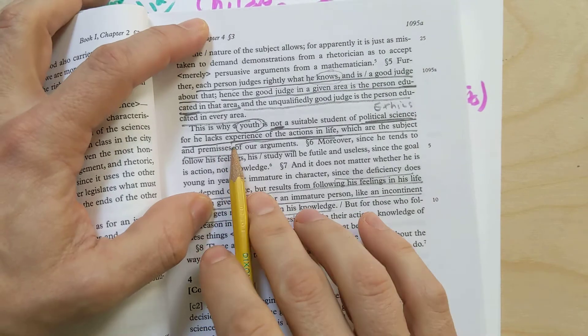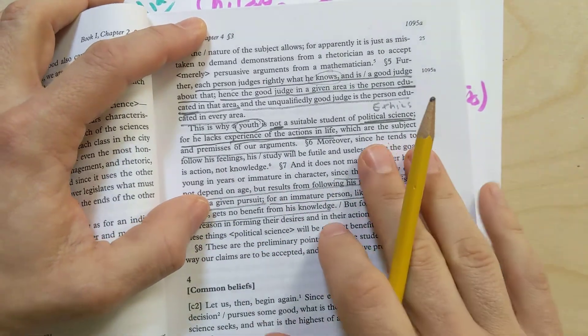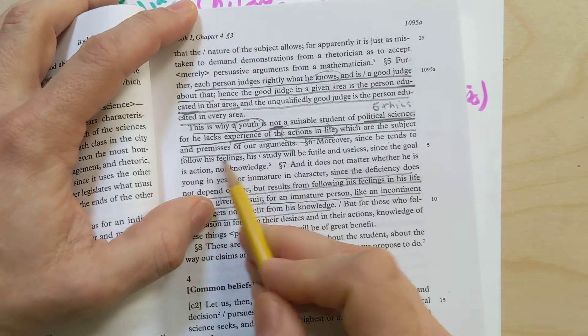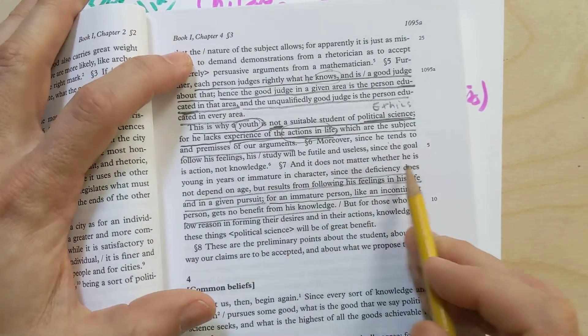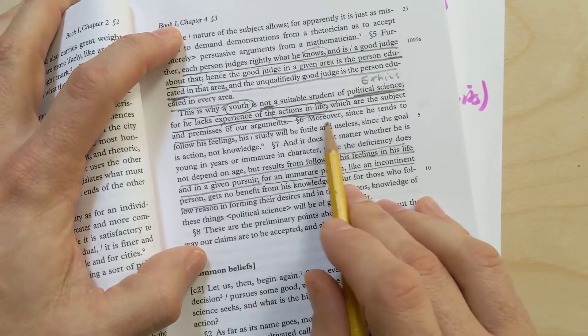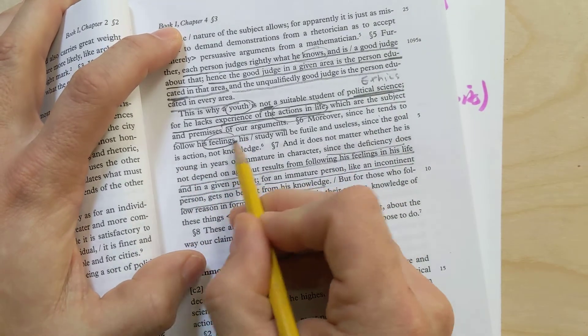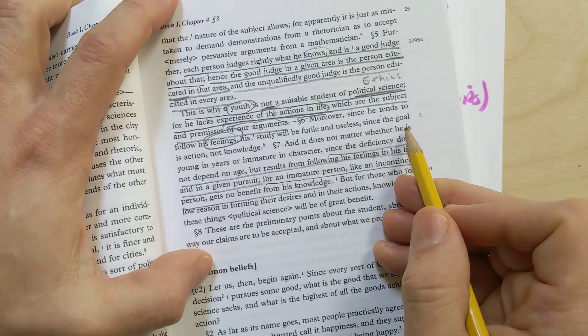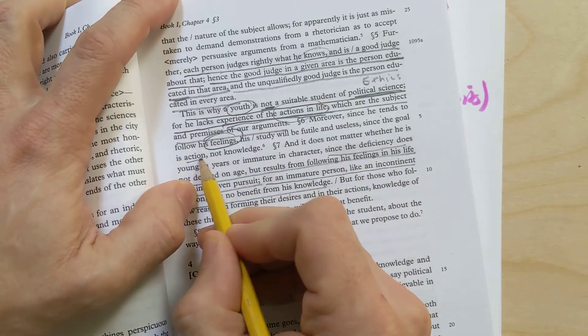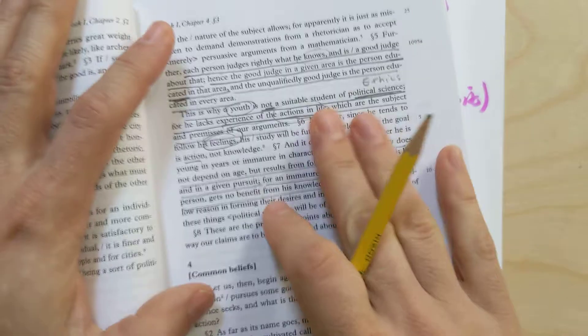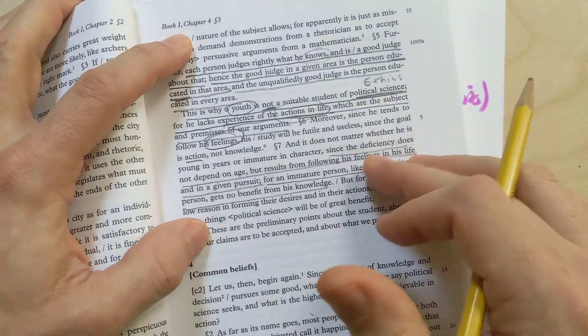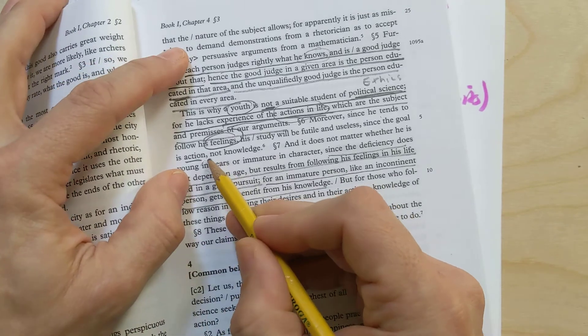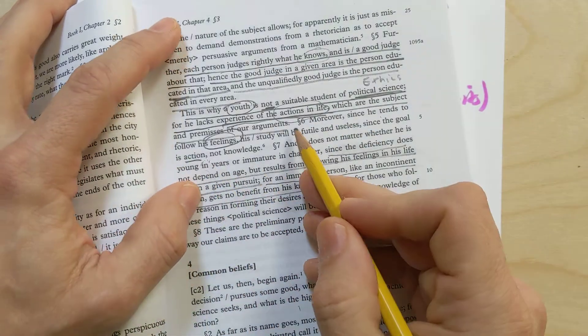If you're going to be a good politician or if you're going to just be a good human who's studying ethics, you need to have experience in life's actions because this is what everything's about. And then Aristotle continues. He says, moreover, since he tends to follow his feelings and his study will be futile and useless since the goal is action, not knowledge. The purpose of this text and us studying ethics is not to just know more, but to be able to do, to become the kind of person and to act out in our understanding.